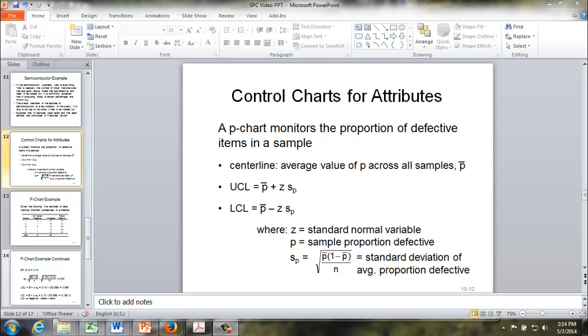The upper and lower control limits of a p-chart are given by these two formulas. z is the usual standard normal variable z-score. sp is the standard deviation of proportion defective. The formula for sp is this, and this comes from the standard deviation of a Bernoulli distribution.